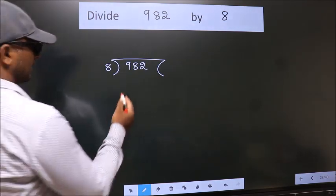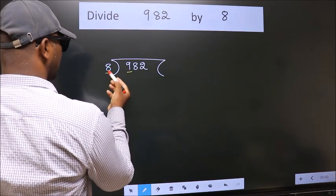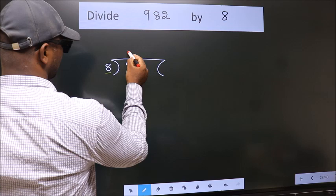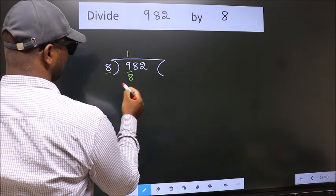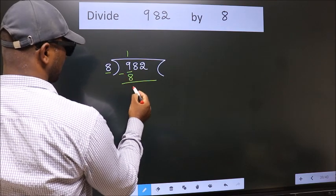Here we have 9, here 8. A number close to 9 in the 8 table is 8 once, which is 8. Now we should subtract. We get 1.